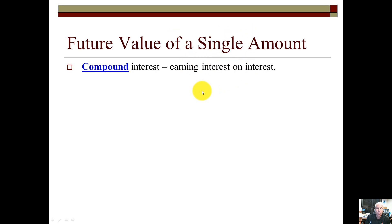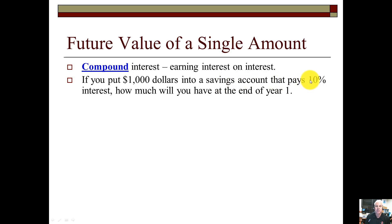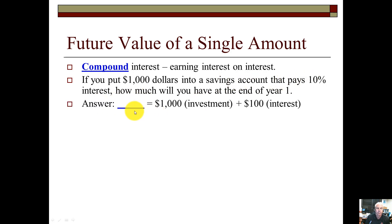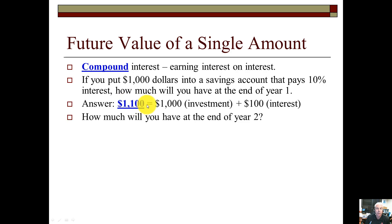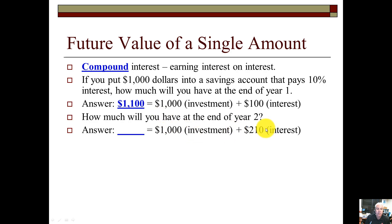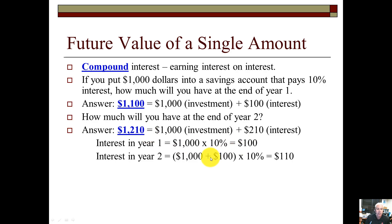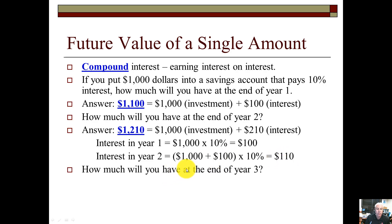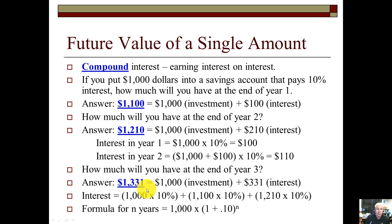Compound interest means you're earning interest on interest. If you put $1,000 into a savings account at 10%, at the end of year one you'd have $1,100. At the end of year two, you earn 10% on $1,100, giving you $210 in interest — so $1,210 total. At the end of year three, you'd have $1,331, because the $110 from year two compounds as well.